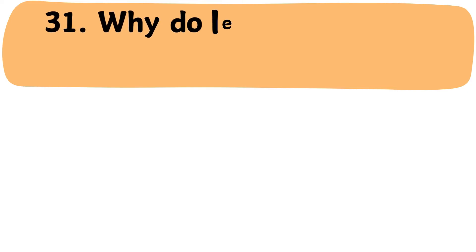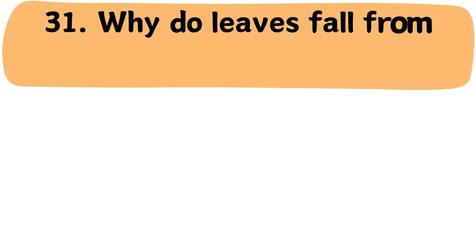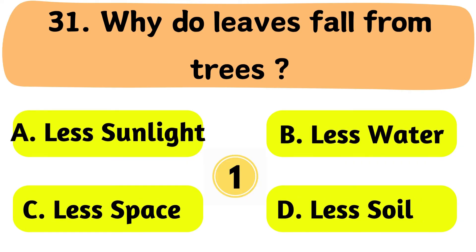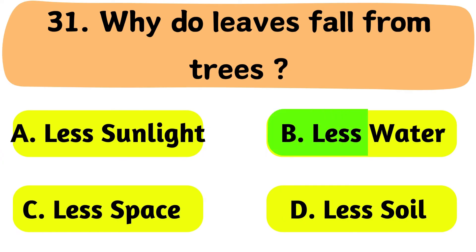Question No. 31: Why do leaves fall from trees? A. Less sunlight. B. Less water. C. Less space. D. Less soil. The correct answer is Option B: Less water.